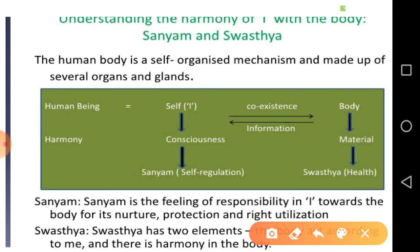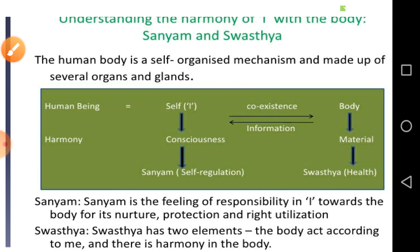खुद के द्वारा नियंत्रित होना उसको सयम की स्थिति कहते हैं। Body material order को हम संवेदी तंत्रिकाओं के माध्यम से समझते हैं कि मेरे शरीर के लिए किस तरह के भोजन की आवश्यकता है। Sayam is the feeling of responsibility in self towards the body for its nurture, protection and right utilization — पोषण, संरक्षण, और उचित उपयोग।